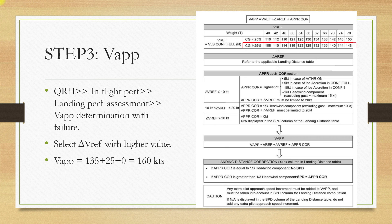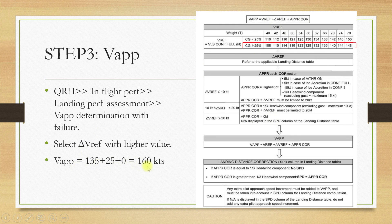We shall choose delta V ref of 25 and move on to the approach correction. Since our delta V ref is more than 20 knots, our approach correction will be 0. Adding all three values, our V approach speed comes out to be 160 knots.